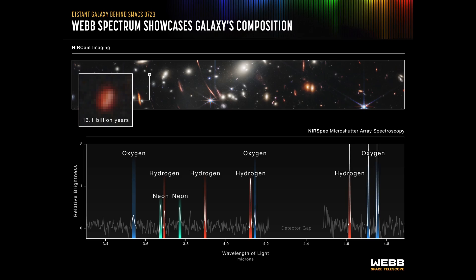Webb got spectra to figure out what those galaxies are made of. This one we're seeing as it looked 13.1 billion years in the past, less than a billion years after the Big Bang. And we're seeing the elements of oxygen and hydrogen, as well as neon. This is how the oxygen in our bodies was made — in stars, in galaxies — and we're seeing that process get started.